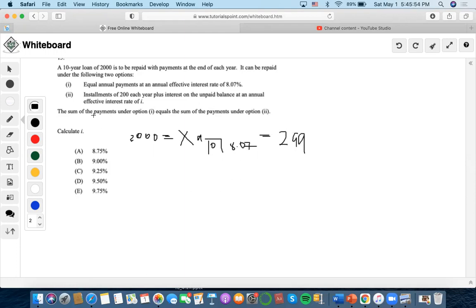Okay, now the question says the second part is installments of $200 each year plus interest on the unpaid balance. So this is part one. Part two is installments of $200 throughout each year for 10 years plus interest on the unpaid balance at an annual effective interest rate of i.